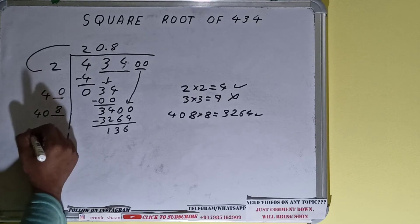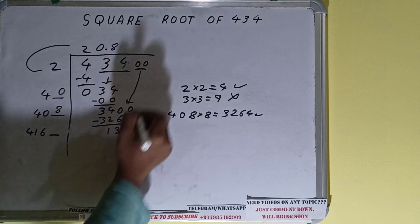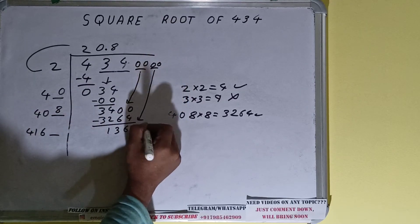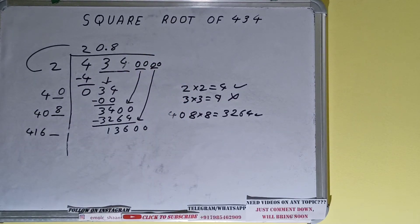Now 408 × 8 we did, so add both: 408 + 8 will be 416, and one digit extra. This we need to make big. So bring the next pair of zeros down and it will become 13600. We can try 3 times.